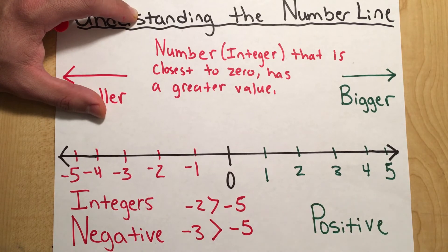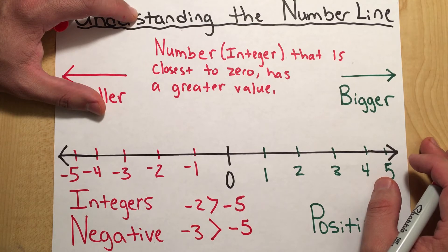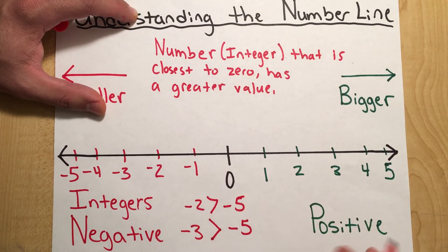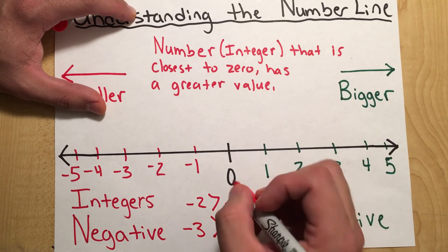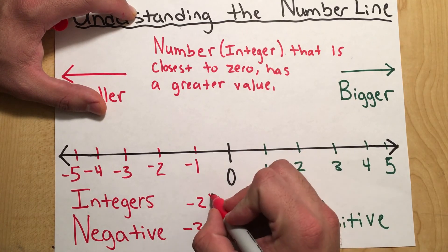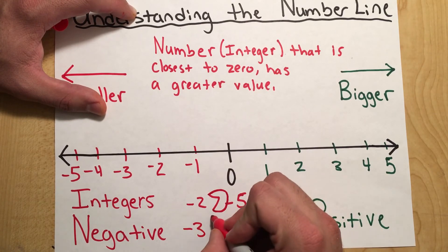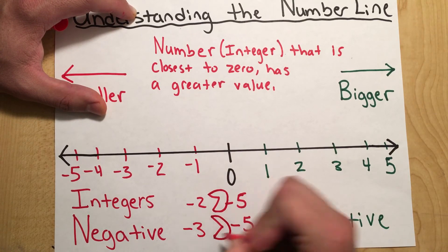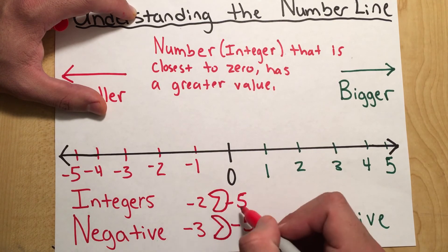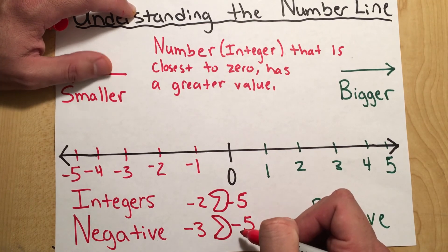One way we've taught students at our campus to remember the greater than and less than signs is by creating a Pac-Man. I know it might seem silly, but it really works well with students. Pac-Man always eats the bigger number. So negative two is greater than negative five, and negative three is greater than negative five.